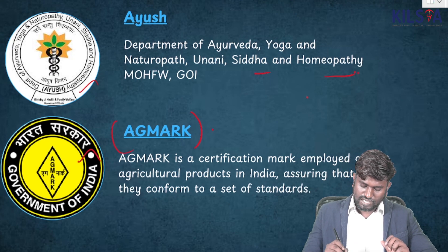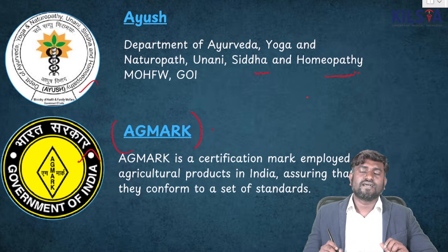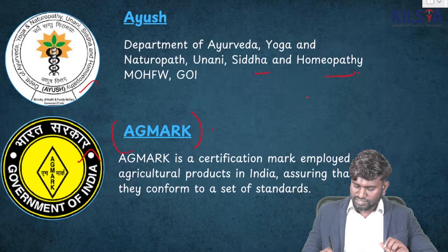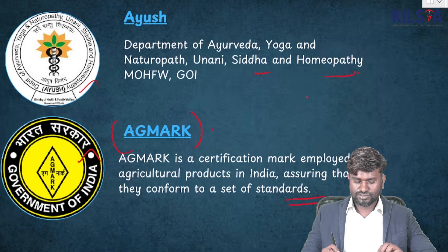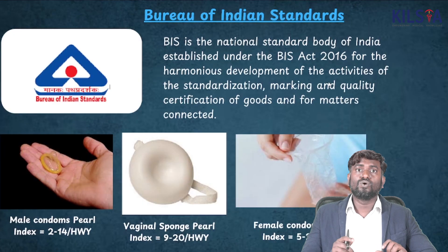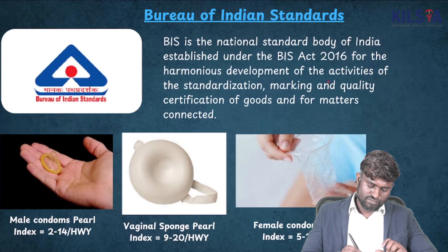This is called Agmark. Agmark is a certification mark employed on agricultural products in India, assuring confirmation that it meets good standards. This is the logo of the Bureau of Indian Standards — very important.